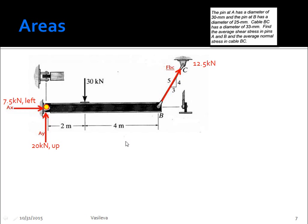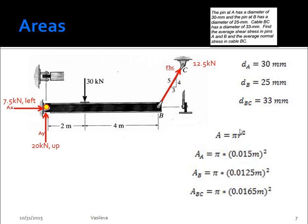So the next thing that I did is I just solved for all of my areas at pin A and at pin B and the cable just to get it out of the way. So they give us three different diameters. And obviously, A is pi r squared. So I just kept it like this without getting a final answer.